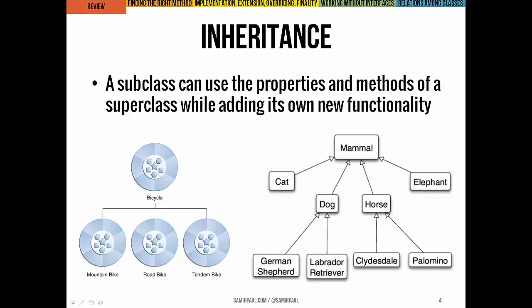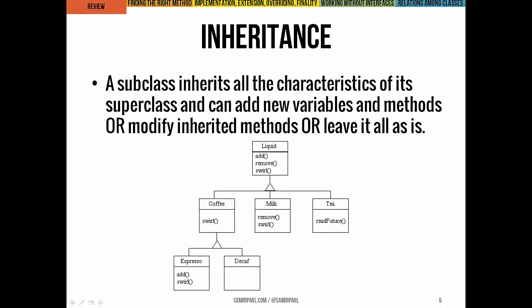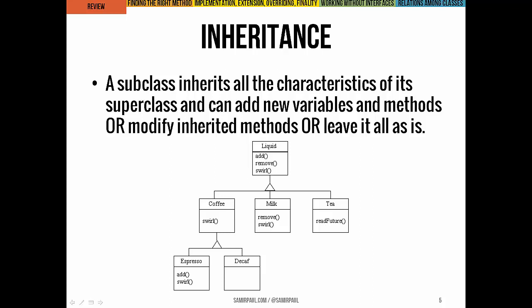Coming back to this massive idea of inheritance: one of the big takeaways is that a subclass can use any of the properties and methods of a superclass, and it can add its own functionality. It can use those inherited methods and variables as they are, or it can modify them — leave them as-is, or change them in whatever way it sees fit.